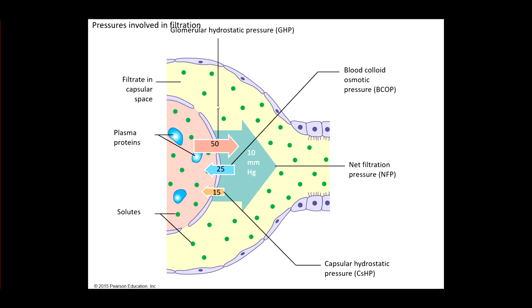So this whole process is known as filtration. Notice all of this takes place in the glomerular capsule. This is the capsular lining right here, the capsular epithelium. And then again, here's going to be your capillary.